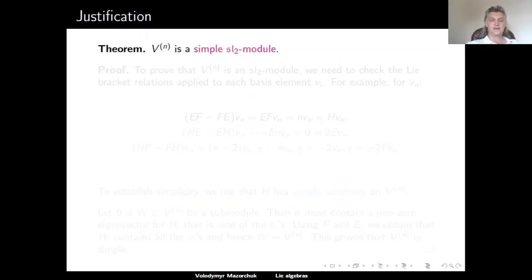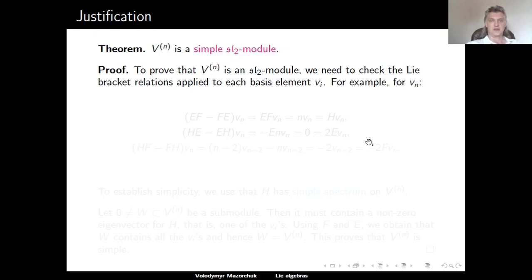The claim is that V^n is a simple SL2 module. There are two sub-claims: first, V^n is an SL2 module; second, the SL2 module V^n is simple. To prove claim one — that V^n is an SL2 module — we need to check the Lie bracket relations when applied to each basis element V_i. We will check them on V_n, and all others can be checked similarly.